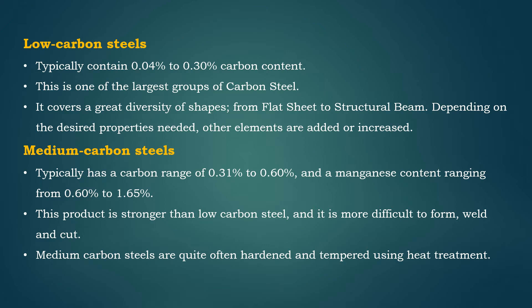Low carbon steel, or mild steel, typically contains 0.04% to 0.3% carbon content. This is one of the largest groups of carbon steel and covers a great diversity of shapes, from flat sheet to structural beam. Depending on the desired properties, other elements are added — for example, for drawing quality, the carbon level is kept low and aluminum is added, while for structural steel, the carbon level is higher and manganese content is increased.